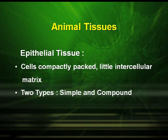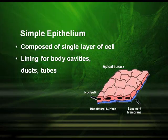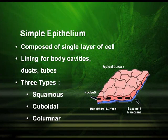There are two types of epithelial tissues: simple and compound. Simple epithelium tissues are composed of a single layer of cells and are found in the lining of body cavities such as ducts and tubes. Based on shape, they may be of three types: squamous, cuboidal, or columnar.